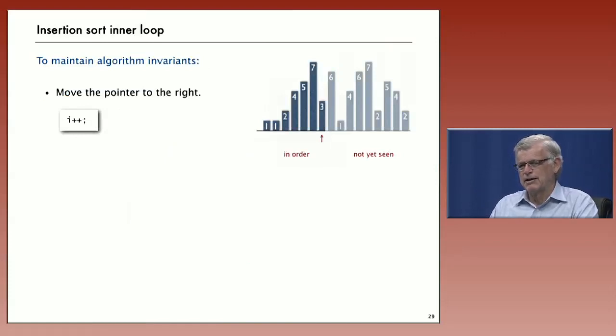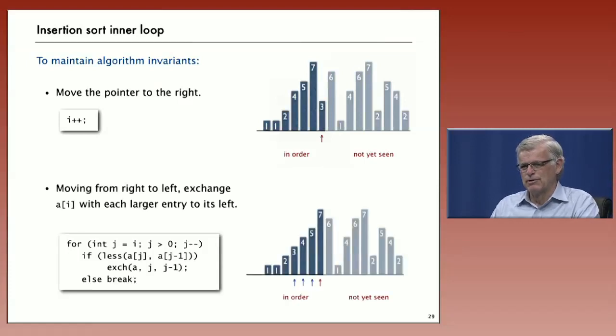Move the pointer to the right, it's incremented again. Now the invariant's broken because the element on the pointer is not in sorted order. To put it in sorted order, we have to move from right to left, exchanging it with every larger element to its left, and that's what the code at the bottom does. It starts j at i, and decrements j, exchanging j with the elements to its left, a of j with the element to its left, a of j minus 1, as long as a of j is less than a of j minus 1, or j is bigger than 0.